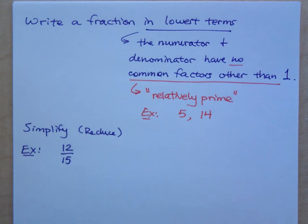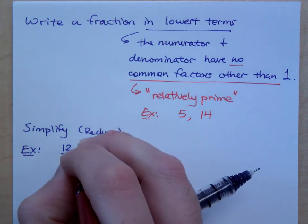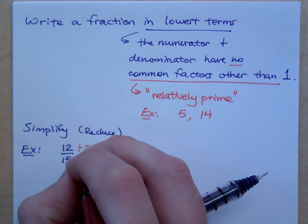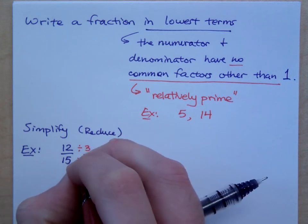And as we saw in class last time, we saw that we can write an equivalent fraction by multiplying top and bottom times the same number, or dividing top and bottom times the same number. So we could divide top and bottom by that common factor of 3.